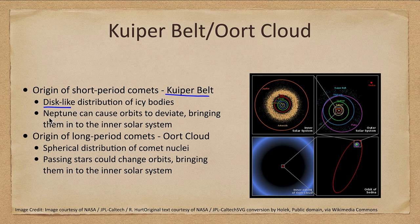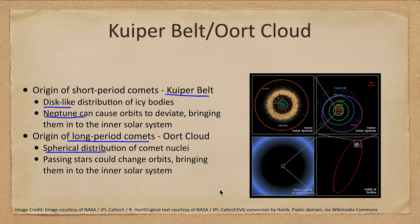Neptune, right at the edge of the Kuiper Belt, can cause the orbits of these objects to deviate, sometimes bringing them into the inner solar system. The Oort Cloud is the origin of long-period comets. It is a spherical distribution of nuclei — a great sphere around the solar system — and a passing star can change orbits, bringing comets into the inner solar system.